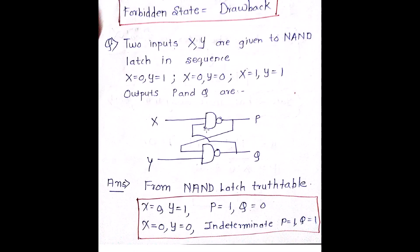We have a question which has been asked in the GATE examination. Let's try to understand this particular question and its solution. What does the question say? There are two inputs X and Y given to a NAND latch in sequence. A NAND latch diagram is given with outputs P and Q. They are giving different input conditions: X=0, Y=1; then X=0, Y=0; and then X=1, Y=1. What are the corresponding P and Q values for this set of inputs?